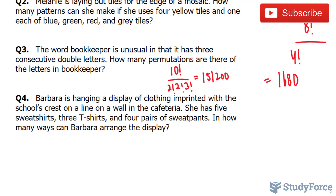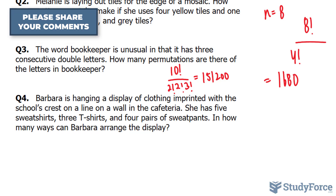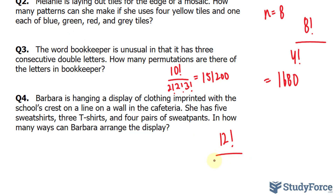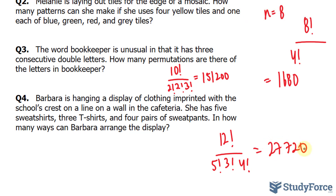Lastly, in question number 4 we're asked: Barbara is hanging a display of clothing imprinted with the school's crest on a line on a wall in the cafeteria. She has 5 sweatshirts, 3 t-shirts, and 4 pairs of sweatpants. In how many ways can Barbara arrange the display? If you count all of these clothing items, we have 12 — that's our n value. We have 5 sweatshirts, so 5 factorial; 3 t-shirts, so 3 factorial; and 4 sweatpants, so 4 factorial. Using our calculator, you should end up with 27,720. Therefore, Barbara can arrange the display in 27,720 different ways.